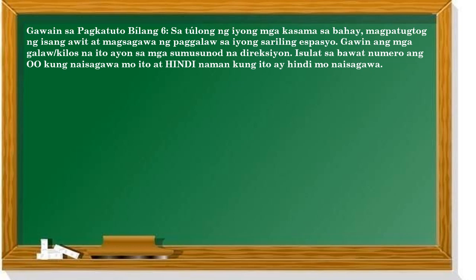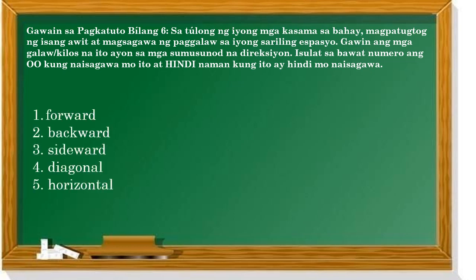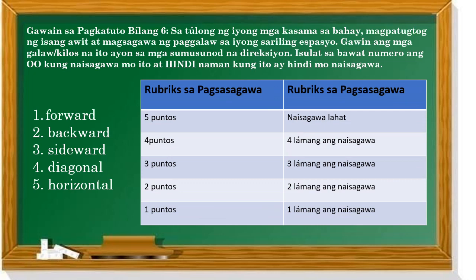Gawain bilang pagkatuto-anim: sa tulong ng mga kasama sa bahay, magpatugtog ng isang awit at magsagawa ng paggalaw sa iyong sariling espasyo. Gawin ang mga galaw o kilos ayon sa mga sumusunod na direksyon: forward, backward, sideward, diagonal, horizontal. Isulat ang 'oo' kung naisagawa mo ito, at 'hindi' kung hindi. Kung nagawa mo lahat, limang puntos; apat, apat na puntos; tatlo, tatlo; dalawa, dalawa; isa, isa. Susundan natin ang rubrics para malaman kung paano makuha ang score.